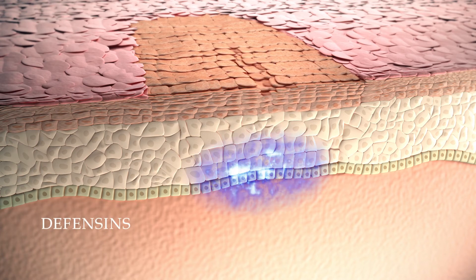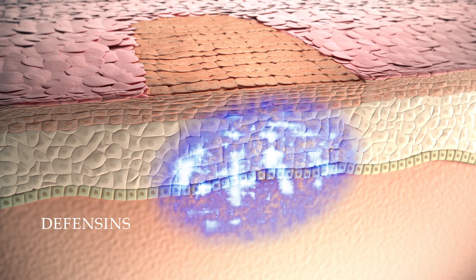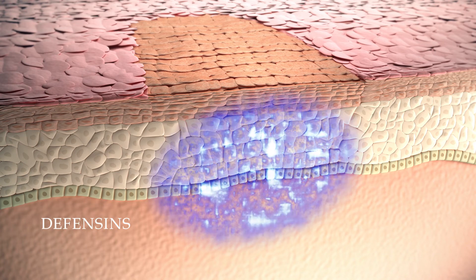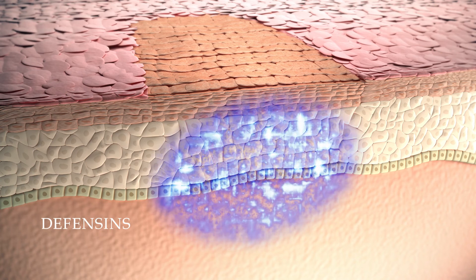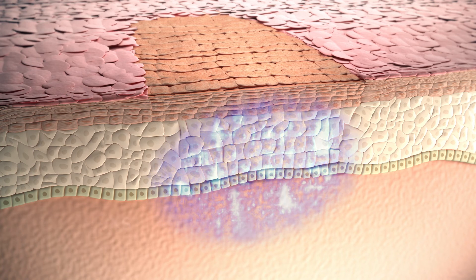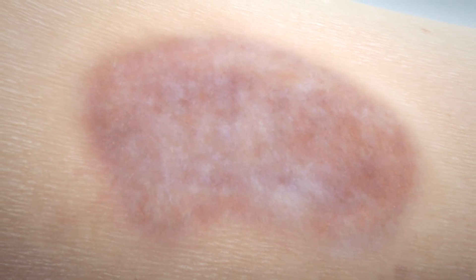Topical application of hyaluronan stimulates the synthesis and release of beta-2-defensin, a very potent antimicrobial peptide, by migrating keratinocytes. Hyaluronan improves the quality of treatment in every clinical situation, thereby offering an innovative option to healthcare professionals and patients.